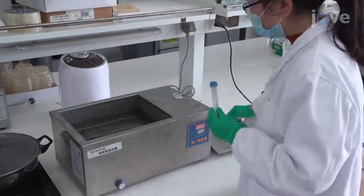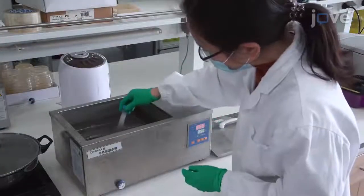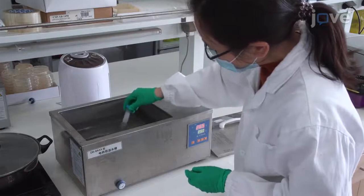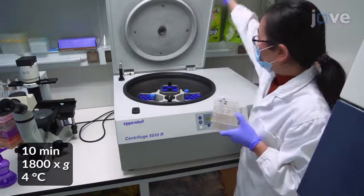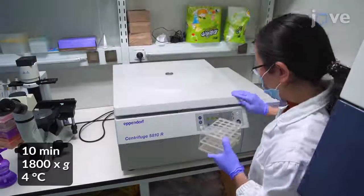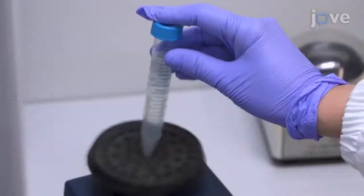To generate working concentrations of virus, thaw the cell solution in a 25°C water bath with constant shaking before pelleting the cell debris by centrifugation. Then transfer the supernatant into a new sterile 15 mL tube.